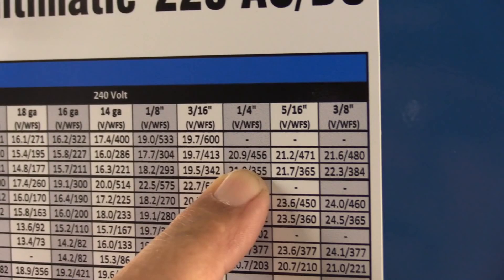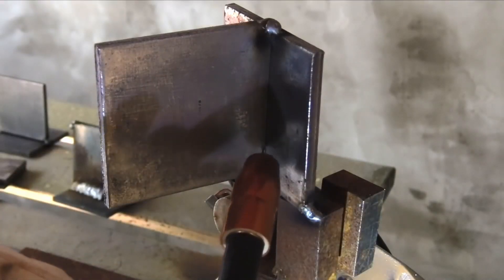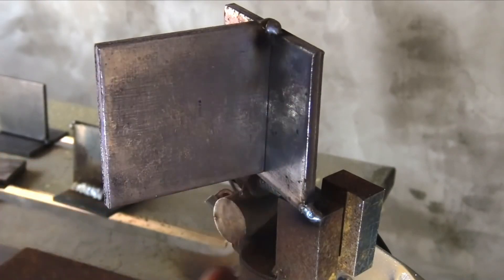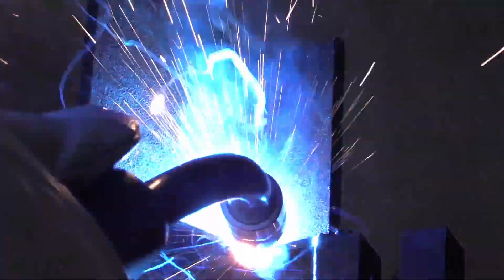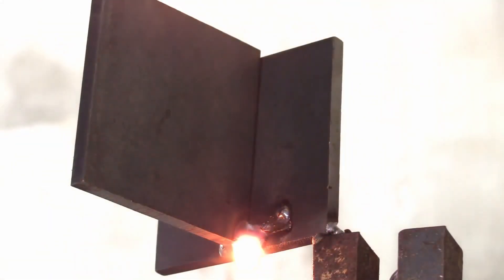Once again the settings 20.9 volts, 456 inches a minute, and again I can just dial it in here by just selecting quarter inch. We're going to see what happens here on this quarter-inch vertical joint here and spoiler alert, it ain't going to be pretty. Right away right there a big ball fell on my boot and I had to stop for just a second.